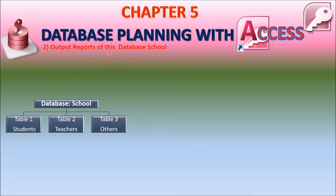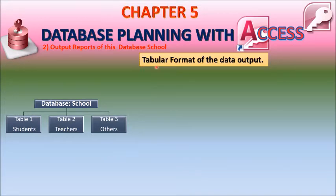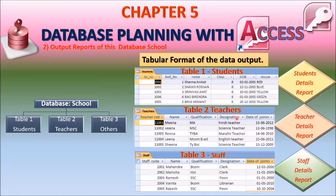Output reports of this school database: We created a database called school, and in it we have created three tables — table 1: Student, table 2: Teachers, table 3: Other Staff. After creating the tables, we entered the records. The records are in tabular format as data output. Table 1 contains student records, table 2 contains teacher records, and table 3 contains staff records. This is how we create the structure of a database by creating different tables.